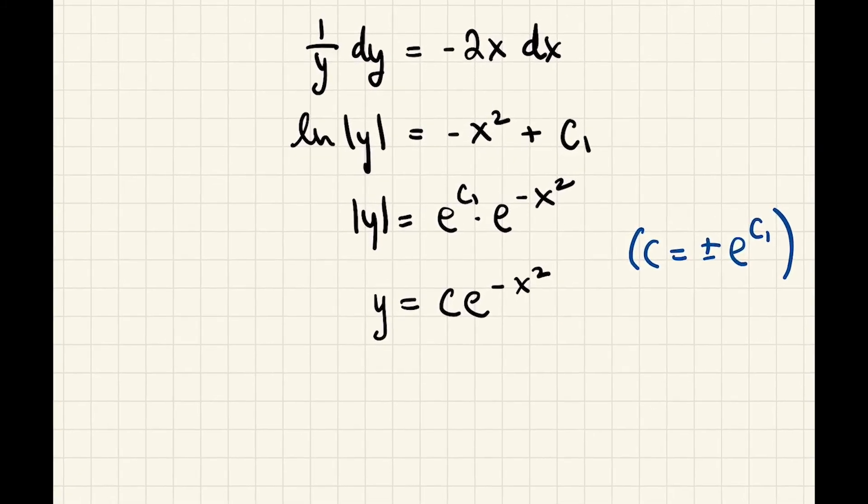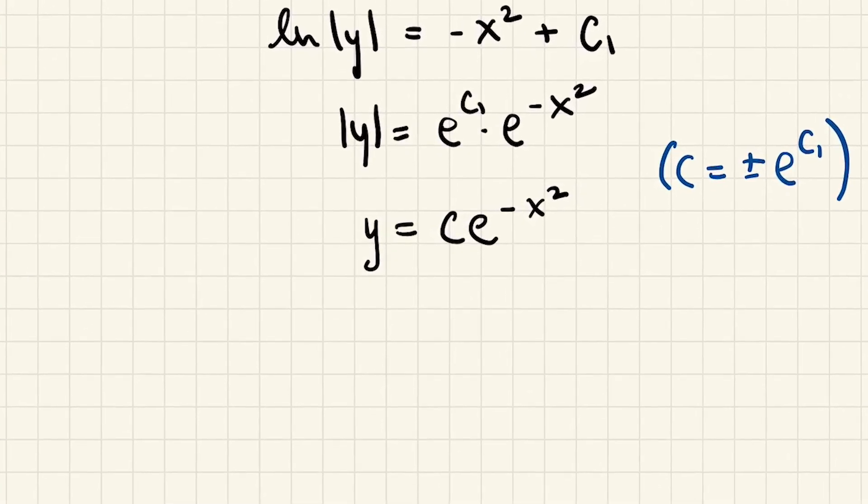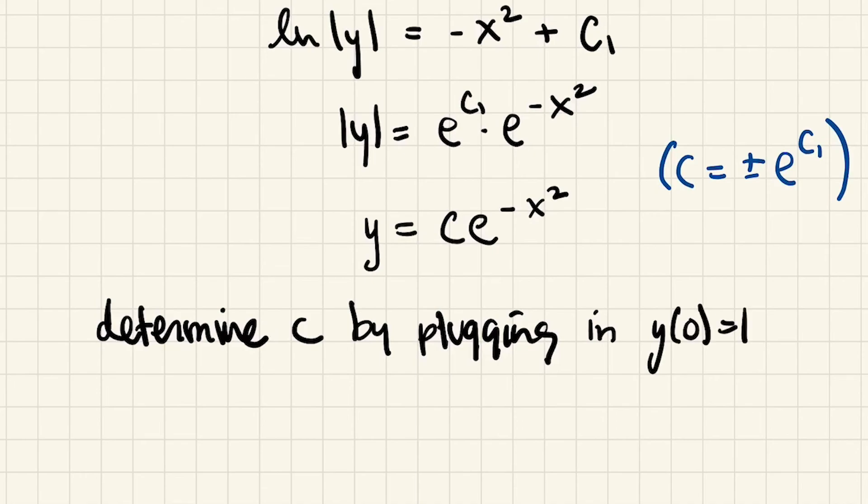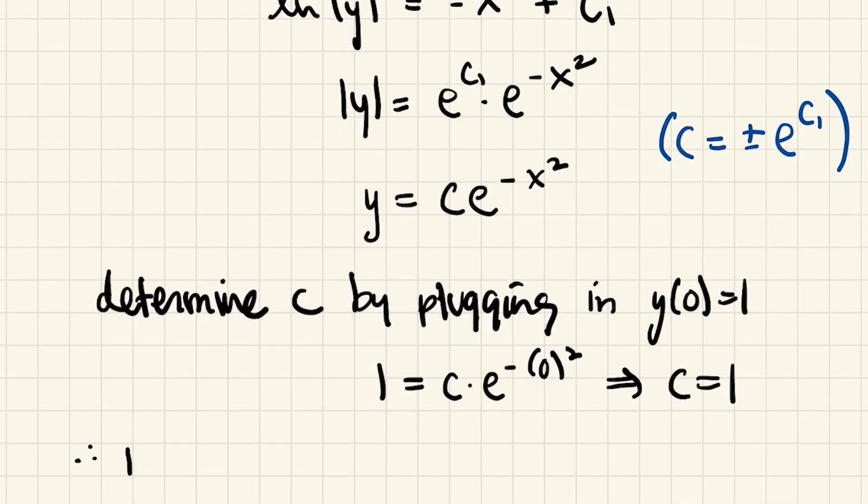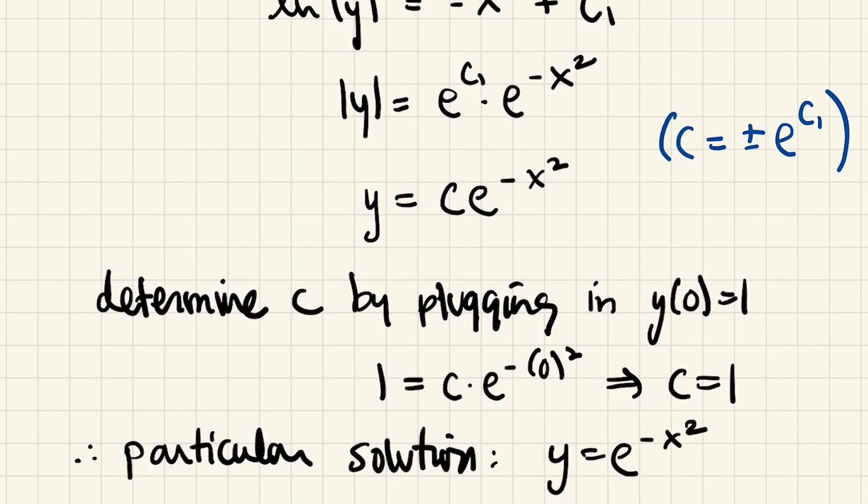This was an initial value problem. So let's determine c by plugging in y(0) = 1. So we get 1 = c · e^(-0²). Well, that tells us that c is simply 1. So the particular solution is y = e^(-x²).